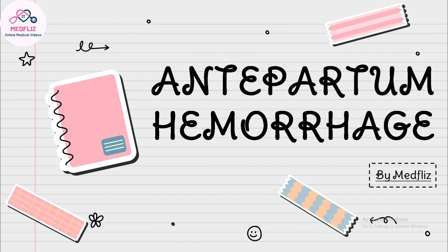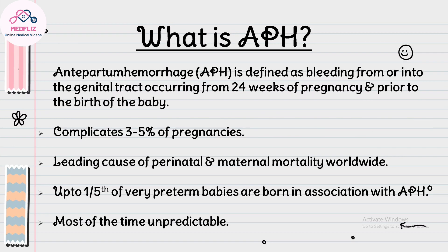Today we will study antepartum hemorrhage. Antepartum hemorrhage is defined as bleeding from or into the genital tract occurring from 24 weeks of pregnancy and prior to the birth of the baby. This time period from 24 weeks onward — any bleeding occurring is called APH.